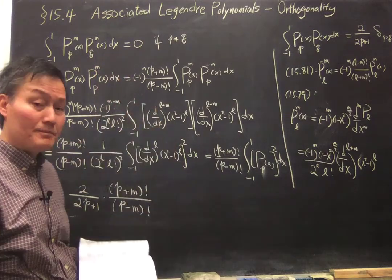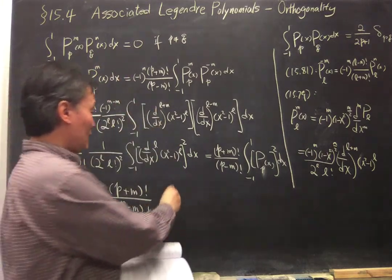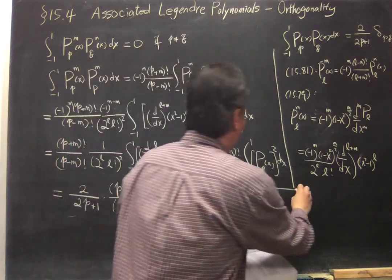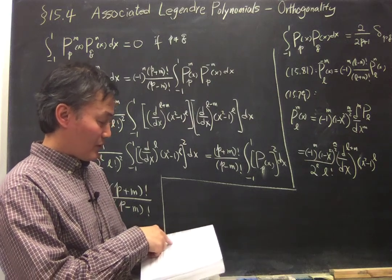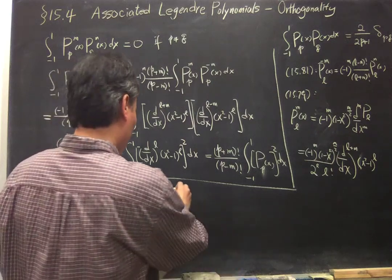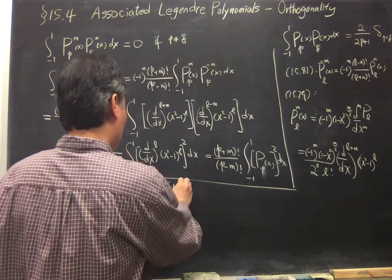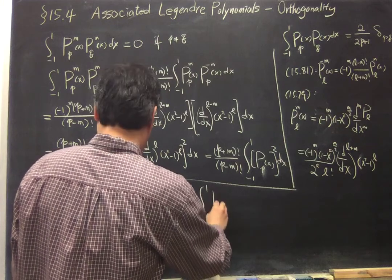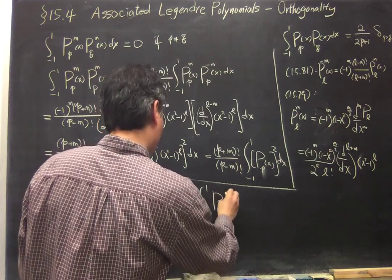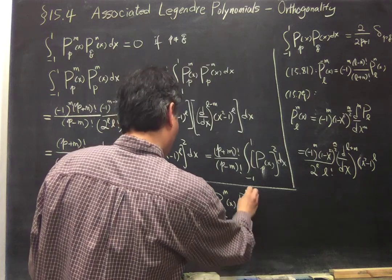There's one more way to have an orthogonal series in equation 15.107. Let me write it down: PLMX PLNX.